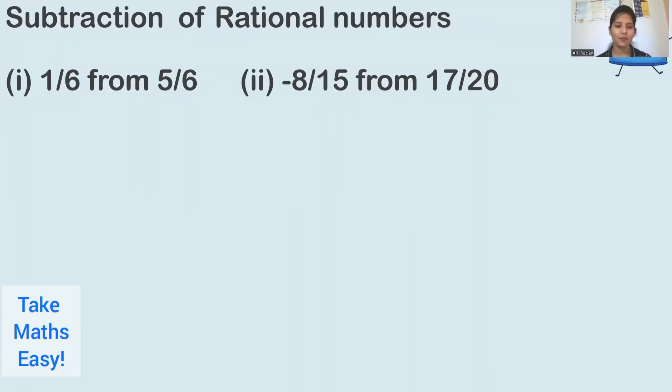You can see 1 by 6 from 5 upon 6. You have to subtract 1 upon 6 from 5 upon 6. You have to keep in mind that from 5 by 6 means 5 by 6 you will write in the beginning. First we will write 5 by 6.